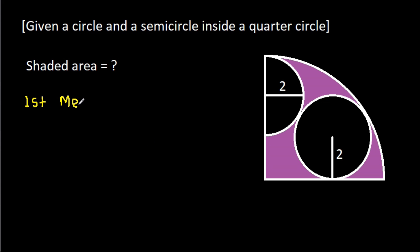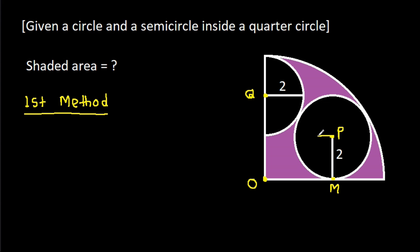For the first method, suppose the center of the quarter circle is O, the center of the circle is P, and the center of the semicircle is Q. Suppose this point is M, and from point P, if we make a perpendicular on OQ, suppose this point is N. Then we know that in a quarter circle this angle is 90 degrees, and also in any circle, the radius and tangent are perpendicular to each other, so this angle will be 90 degrees.